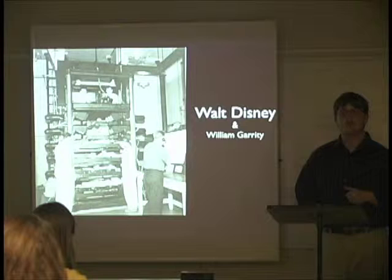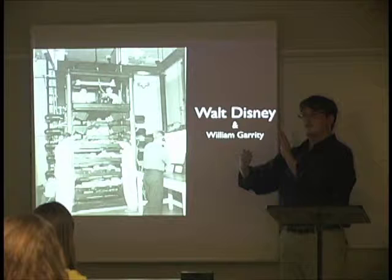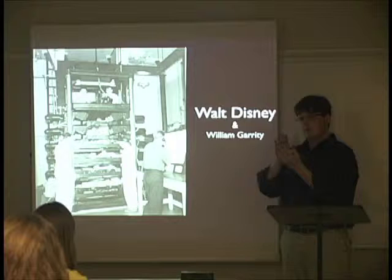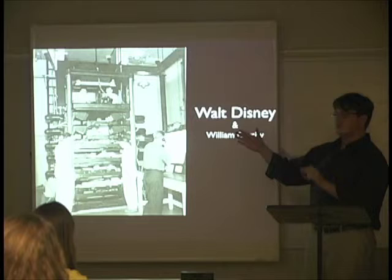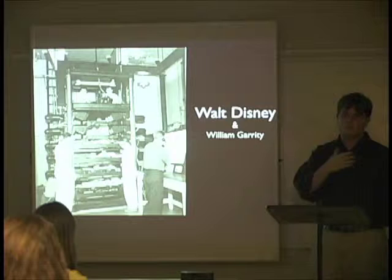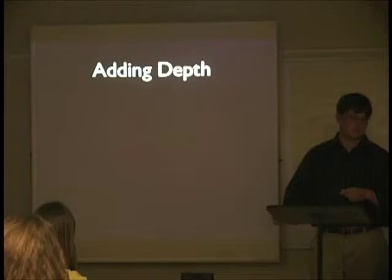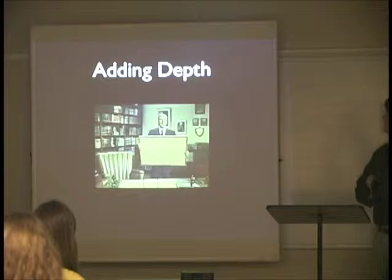Here is Walt talking about the multi-plane camera and why they wanted it. He'll show a cartoon with Mickey Mouse. The original way of doing it was that you had acetate with your character on it, different drawings showing the different motions, and the background would be scrolled over a little bit for every picture taken. So the background looks like it's moving and the character looks like he's walking.